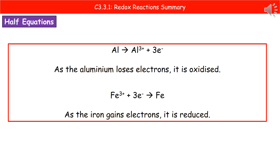Look carefully at the question, because if in the exam they ask you to explain whether it's an oxidation or reduction in terms of electrons, make sure you include: it is an oxidation because it has lost electrons. And if you want to make really certain, you could include the half equation as well, just to show where the electrons are coming from.